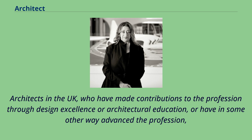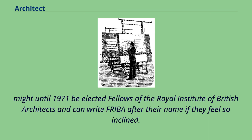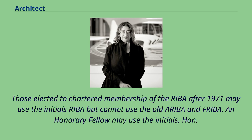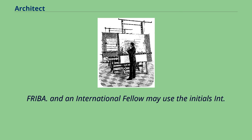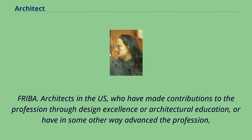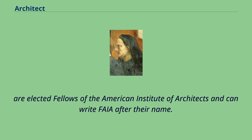Architects in the UK who have made contributions to the profession through design excellence or architectural education, or have in some other way advanced the profession, might until 1971 be elected fellows of the Royal Institute of British Architects and can write FRIBA after their name. Those elected to chartered membership of the RIBA after 1971 may use the initials RIBA but cannot use the older REBA and FRIBA. An honorary fellow may use the initials Hon. FRIBA, and an international fellow may use the initials Int. FRIBA. Architects in the US who have made contributions to the profession through design excellence or architectural education, or have in some other way advanced the profession, are elected fellows of the American Institute of Architects and can write FAIA after their name.